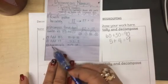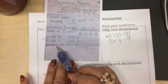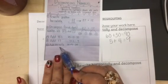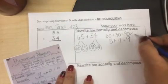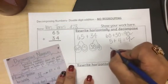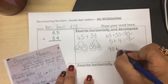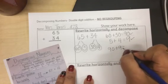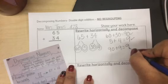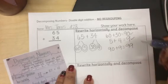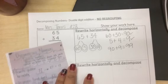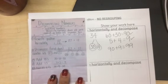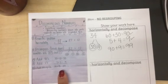Step number five — add the tens and the ones. So we're going to add these tens and these ones. 90 plus nine more is equal to? Ninety-nine. And this is decomposing numbers. This chart will be very helpful for you tonight as you are working on your homework assignment.